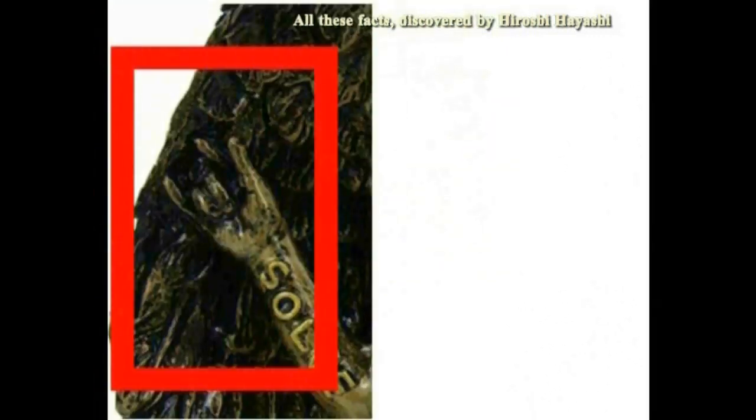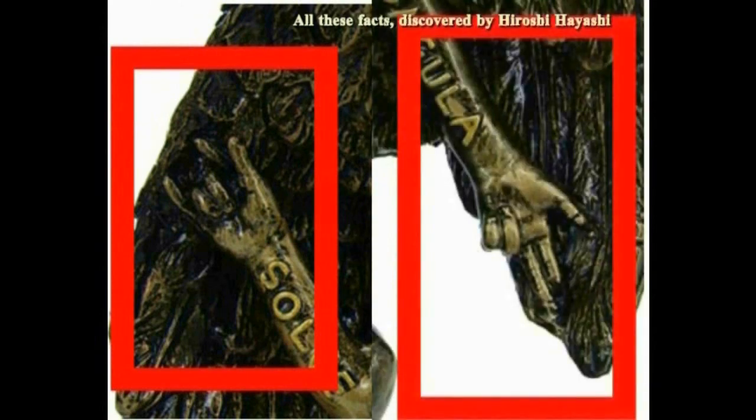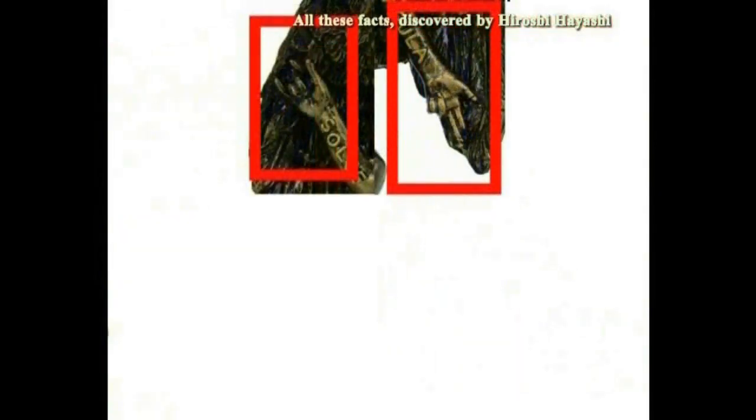これがバフォメットの基本的なハンドジェスチャー、ハンドサインということになります。お腹には棒があり、蛇が絡んでいます。解体と創造という意味だそうです。左のような、マラナスの手をしたバフォメットも時々あります。